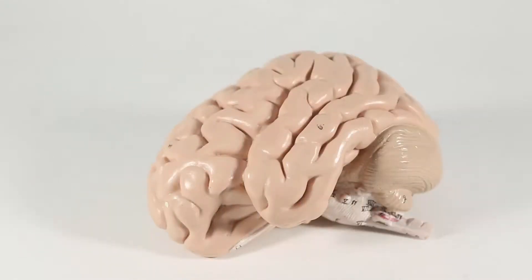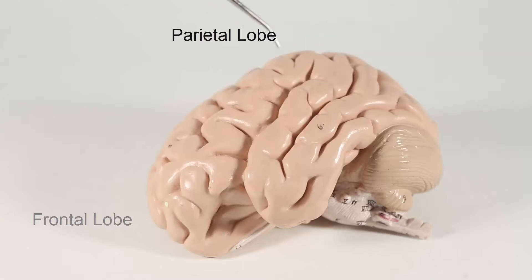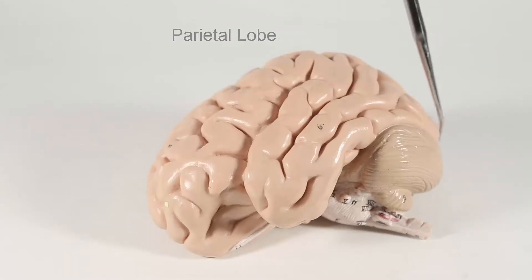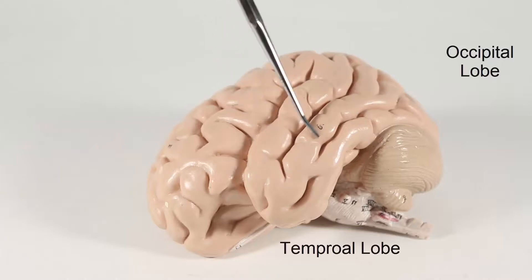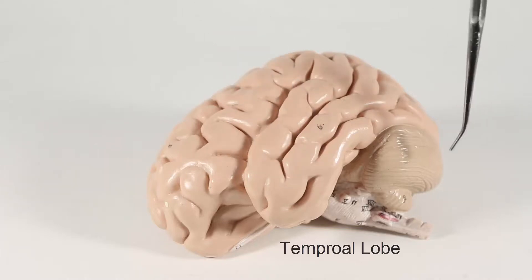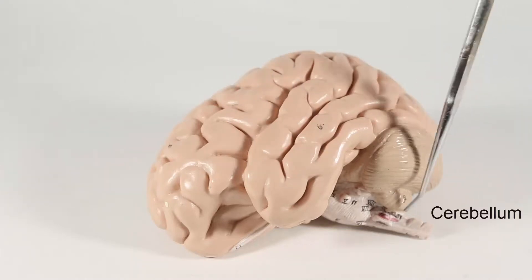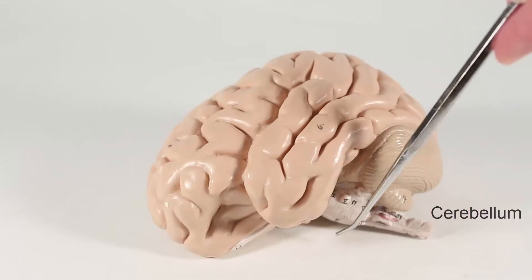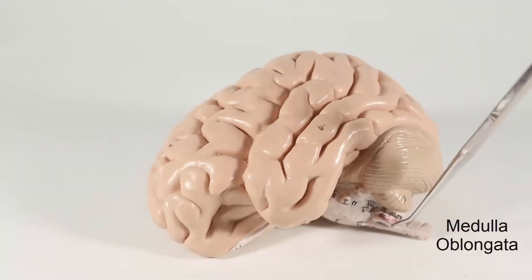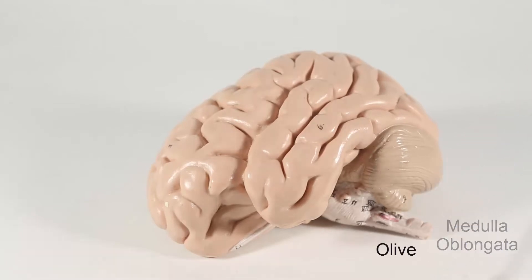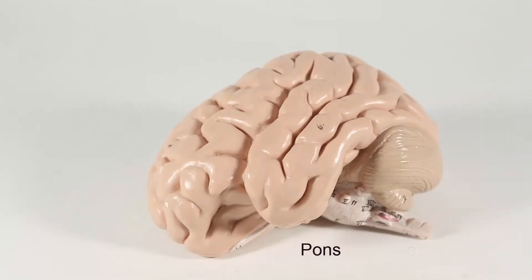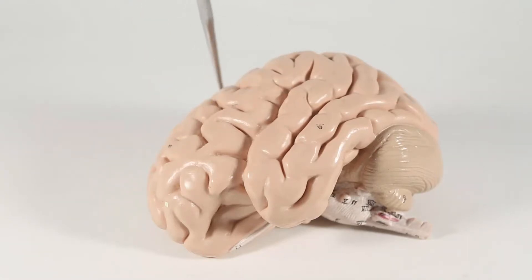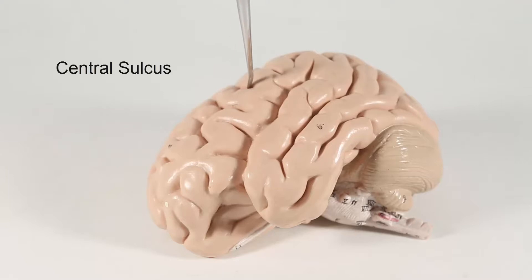Shifting to a lateral view, we're going to see the different lobes. We have the frontal lobe, the parietal lobe which is more up top, the occipital lobe in the back, and the temporal lobe on the side. You can see a portion of the cerebellum right here, and also a little bit of the brain stem down here — the medulla with its olive, and then the pons right here. We can tell the frontal lobe and parietal lobe are separated by this indent called the central sulcus.